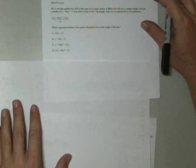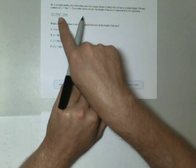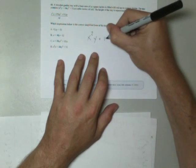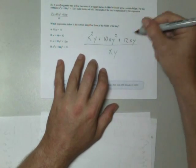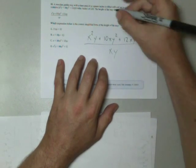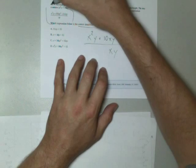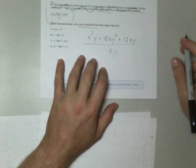A wooden garden tray has a base area of xy square inches and is filled with soil to a certain height. The tray contains x²y + 10xy² + 12xy cubic inches of soil. The height of the tray is represented by the expression x²y + 10xy² + 12xy divided by xy. Let me rewrite that. Which expression below is the correct simplified form of the height of the tray? Well, the height of the tray is represented by this. So what we want to do is simplify this. So this whole setup is not necessary. But you do need to read the problem to discover that it's not necessary.